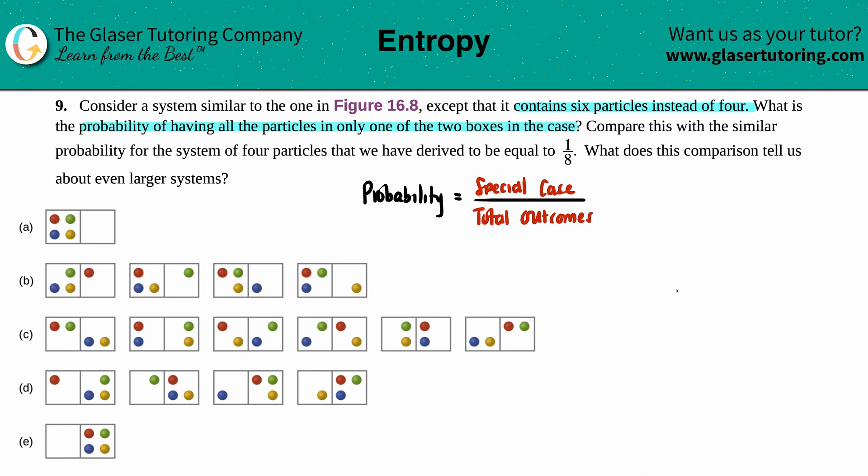Now we want to find out what's the probability of having all the particles in only one of the two boxes. So we might be able to answer the top number—what is that special case? We want all those particles in only one of the two boxes. So if we look at figure 16.8, which is down here, we can kind of see how many times the particles are only in one box.